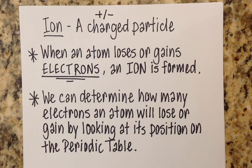So I just put a couple quick things here, great stuff for your notebook. When an atom loses or gains electrons, I've emphasized that because this is all about the electrons, an ion is formed. And we can determine how many electrons an atom will lose or gain by looking at its position on the periodic table.